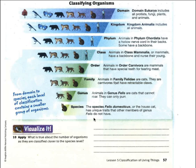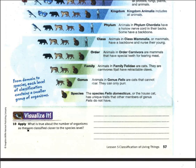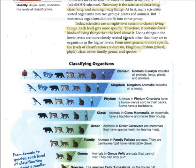That's what this classification system is designed to do for every living thing, and we've done this for two million organisms. As we get closer to the species level, the number of organisms that qualify gets smaller and smaller. Living things in the lower levels are more closely related to each other than they are to organisms in higher levels.